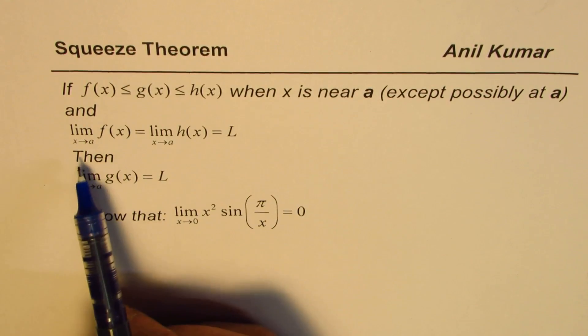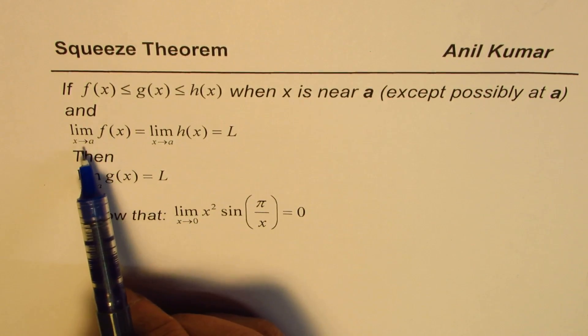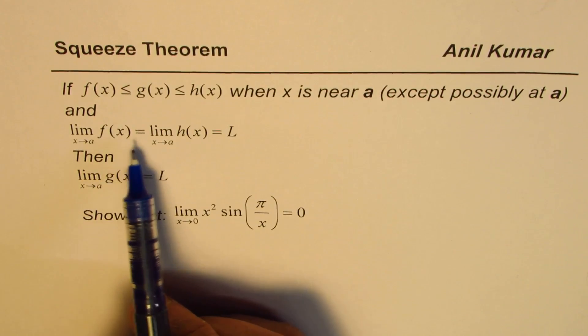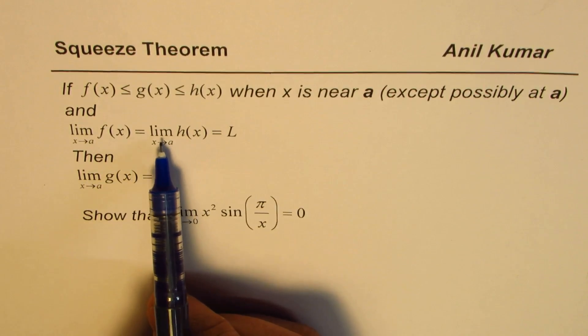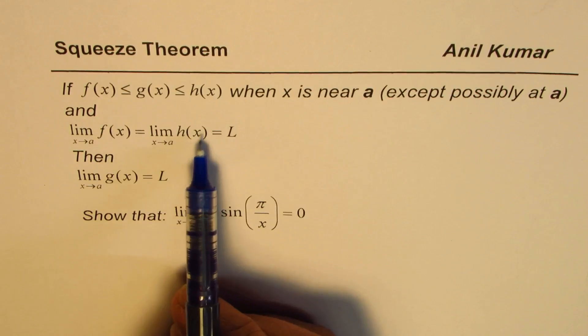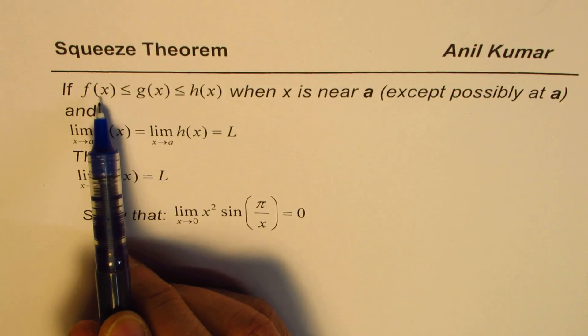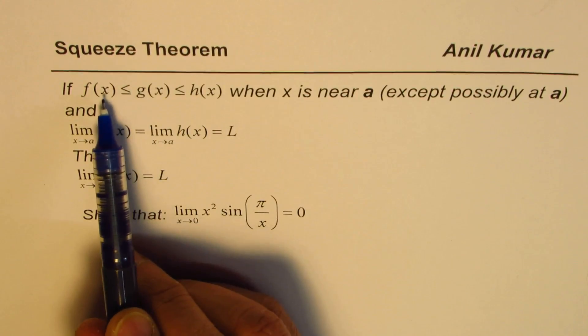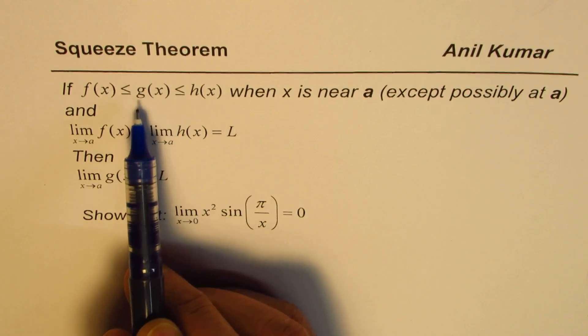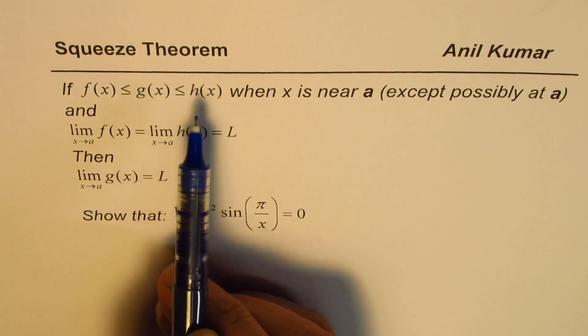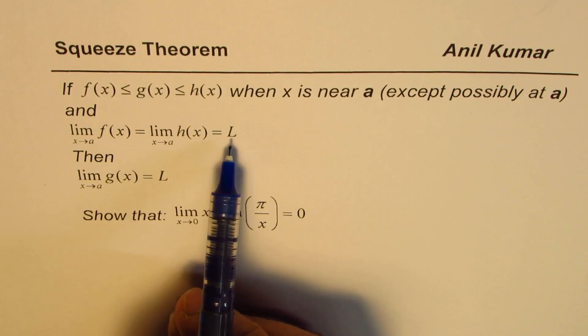and limit of the function as x approaches a for f(x) is equal to limit of the function h(x) when x approaches a is equal to L. That means the limit of these two functions on the outside of g(x) when x approaches a is a value L.